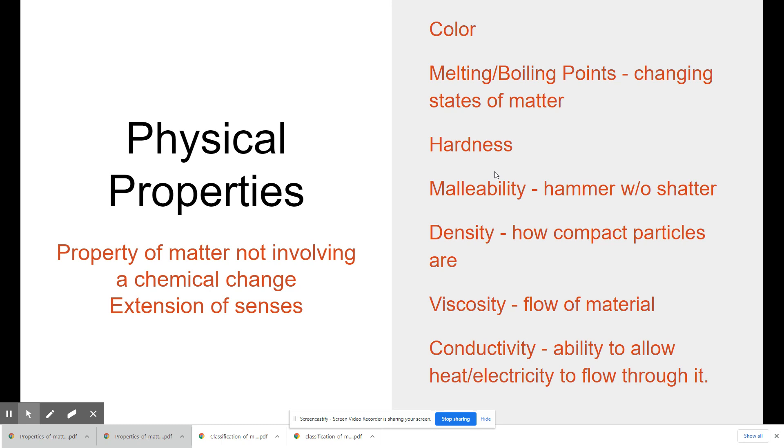Malleability. How much you can bend and shape something. Like gold is very valuable. One of the reasons why gold is so valuable is because it's highly malleable. You can hammer it without it shattering. You can shape it into very thin pieces of jewelry for people to wear. So it has some value there. Density. How compact the particles are. If it's a liquid or anything like that, you can describe how much it flows. Conductivity. How much it conducts heat or electricity. These are all examples of physical properties.